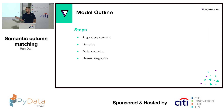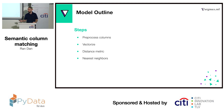So the overall steps: first we need to pre-process our data, then we need to figure out the right way to vectorize it and measure the distance, and then we can use the nearest neighbor approach to suggest new columns.